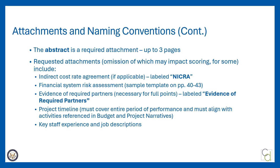There are four required partners: two employers, one workforce partner, and one community-based organization partner. The FOA asks that in addition to the information in your narrative, you include documentation of partnerships. Documentation may include signed letters of commitment, memoranda of understanding, a partnership agreement, or other forms of written commitment. The letters must provide sufficient information to demonstrate that the partners understand and agree with their role, which should align with the roles described in the application. These letters must be labeled 'evidence of required partners' — this attachment does impact scoring.